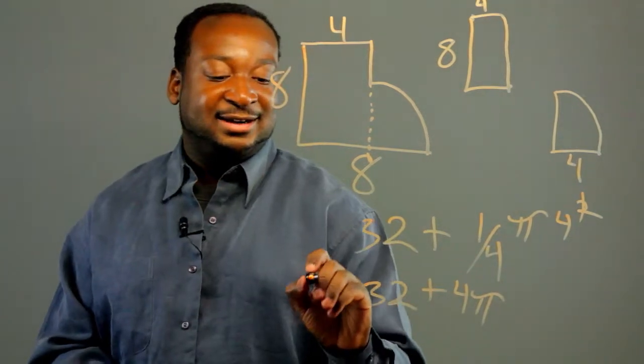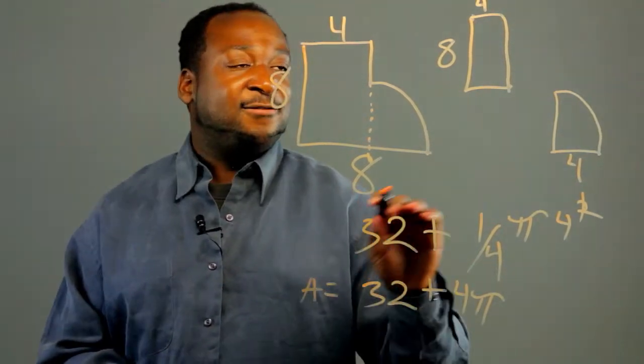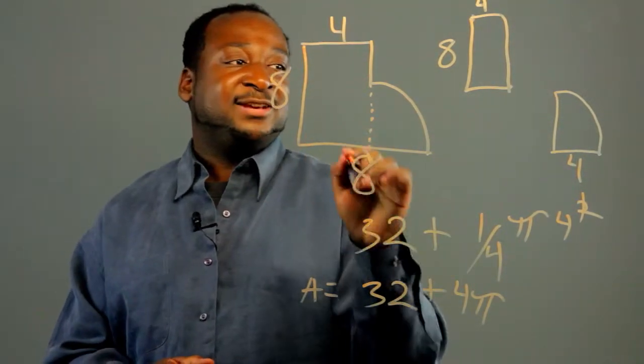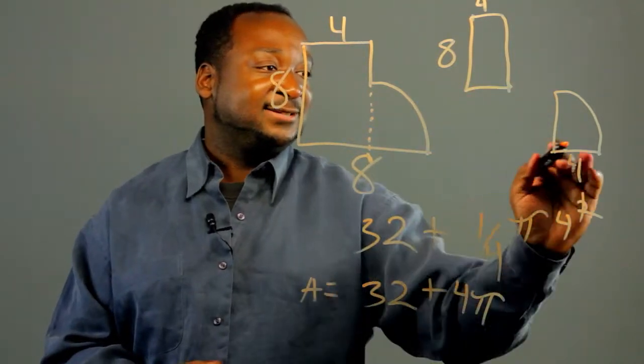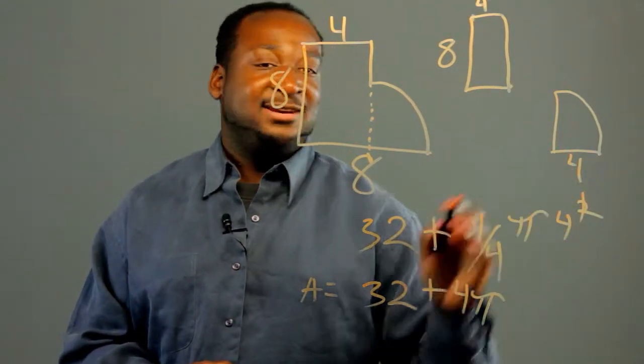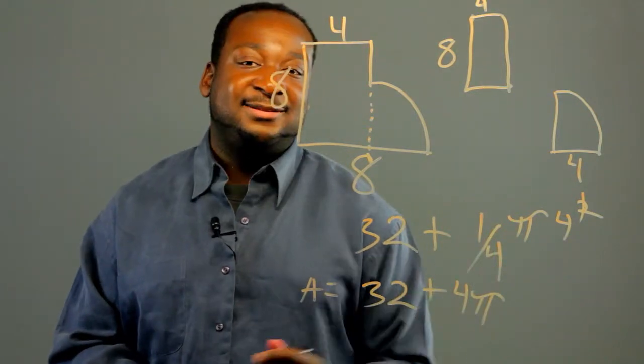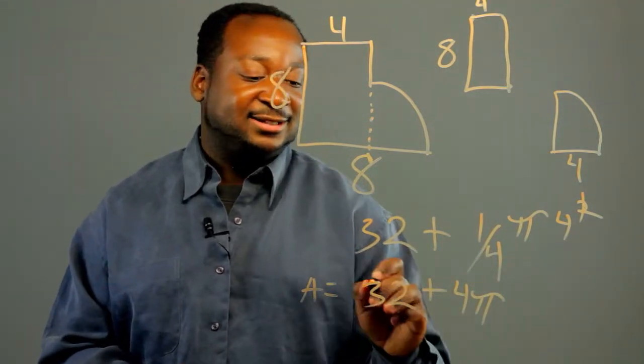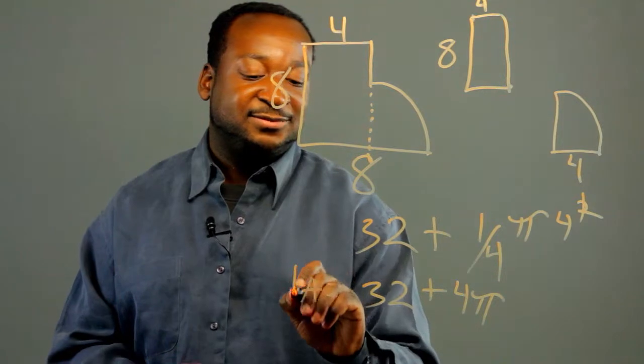That is our area. All we've done is break it up into two regular objects and calculated their area and then added them together. And thus, we have our answer, 32 plus 4 pi.